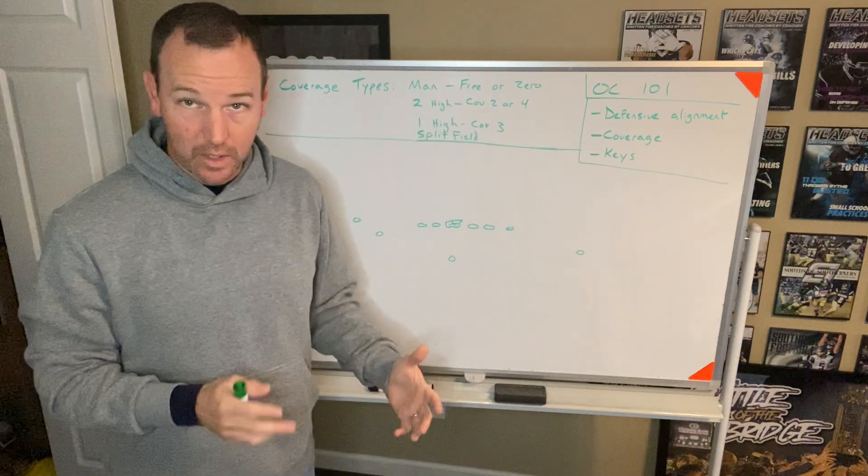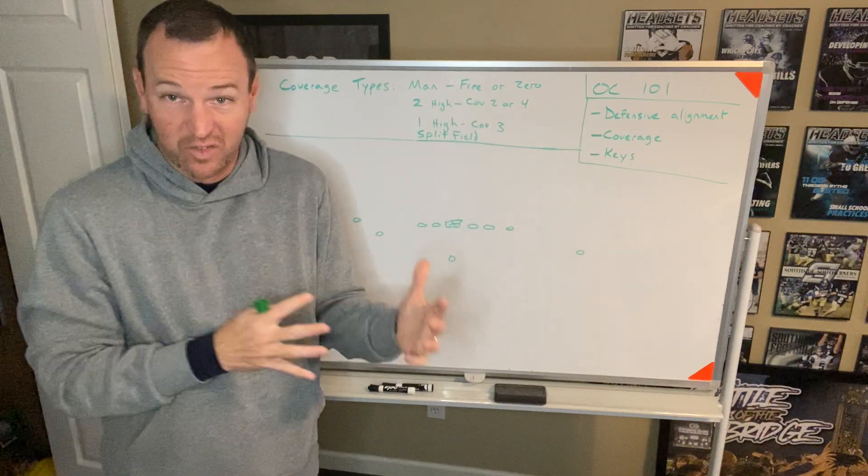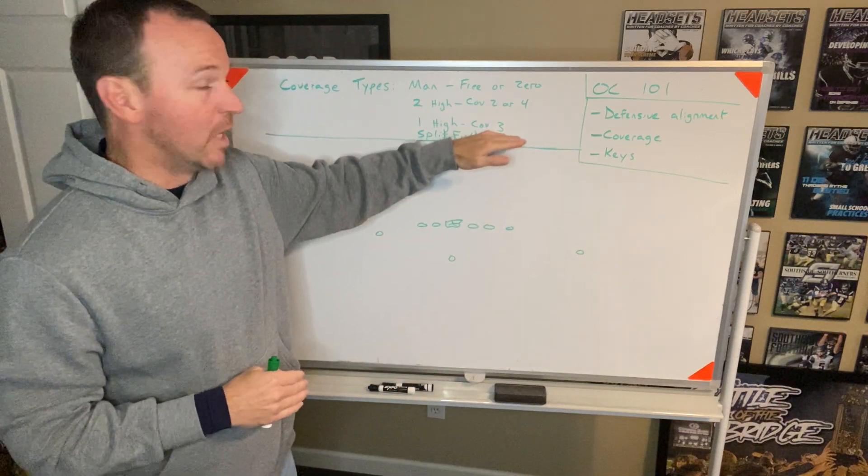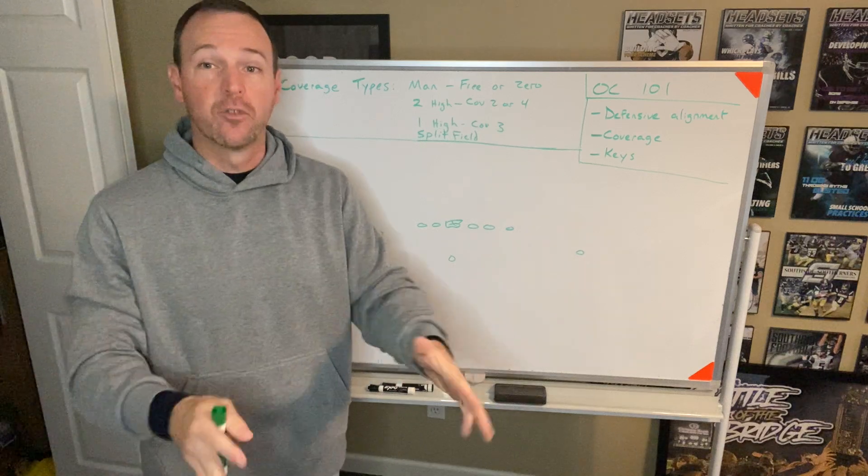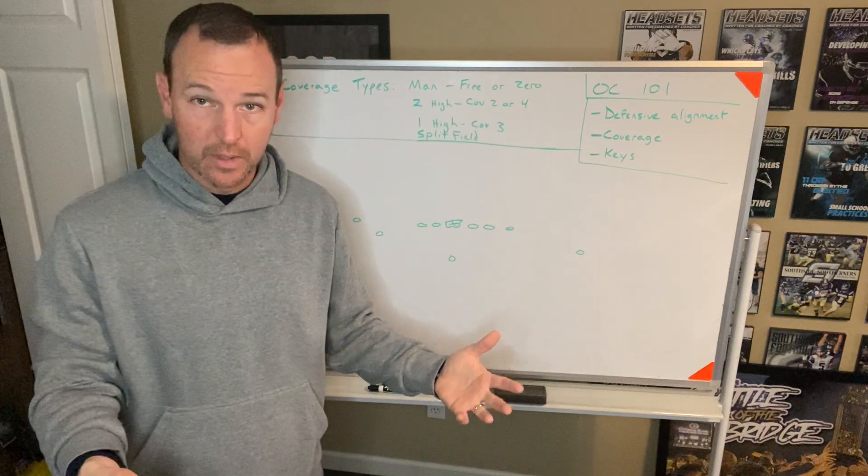Then you have a one-high coverage, which will be a one-high safety. Usually, if that's a zone, that's a cover three, where three guys are responsible for covering deep, everybody else would have underneath.